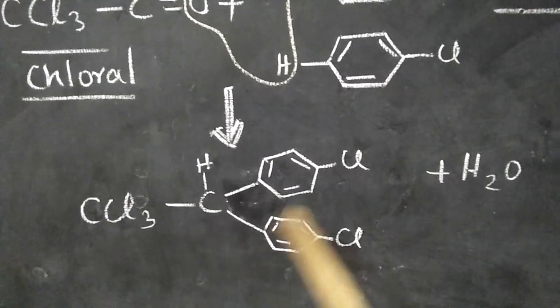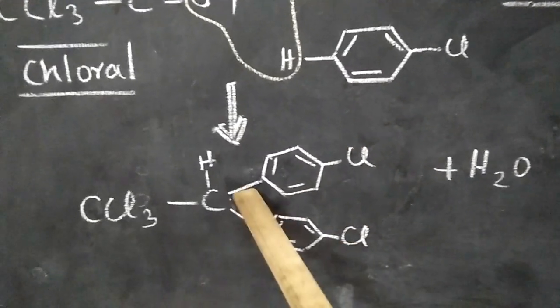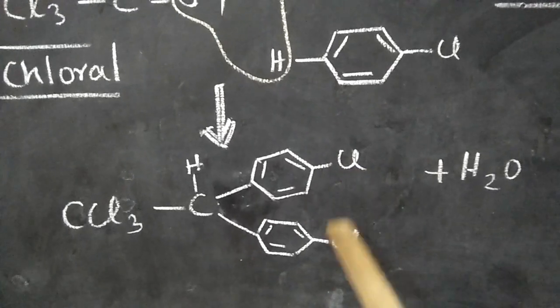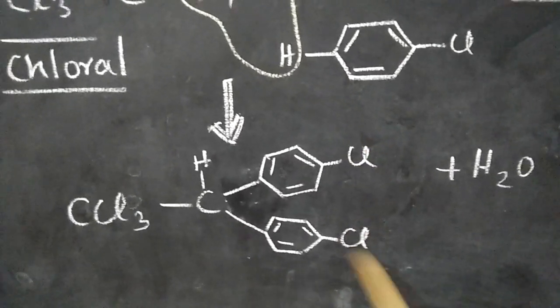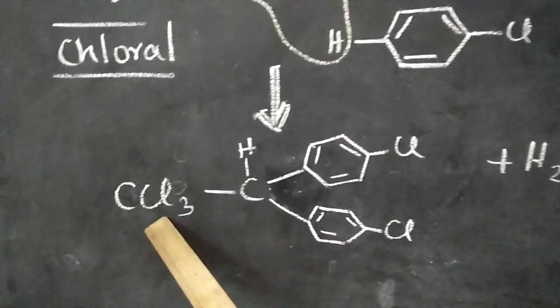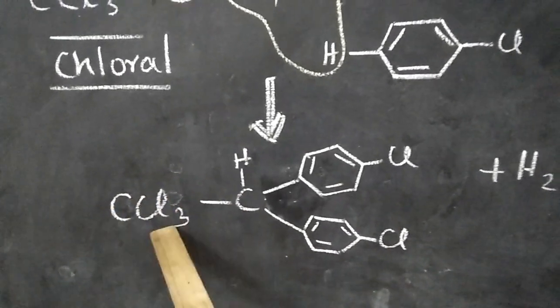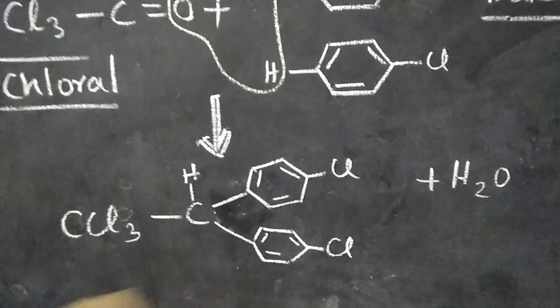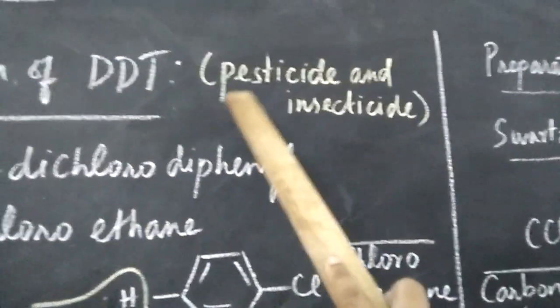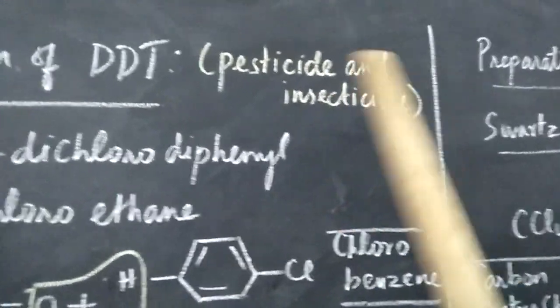Altogether, it is termed as para-para-dichloro, because these are the para-positions with respect to this portion. So para-para-dichloro, diphenyl, trichloro, and 2 carbon atoms is ethane, so trichloroethane. That is the name for DDT. Its important uses: it is used as pesticide and insecticide.